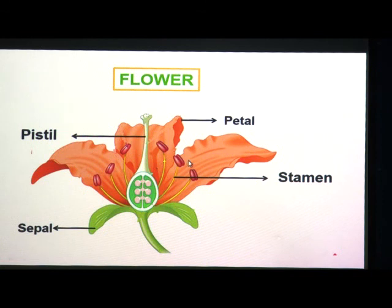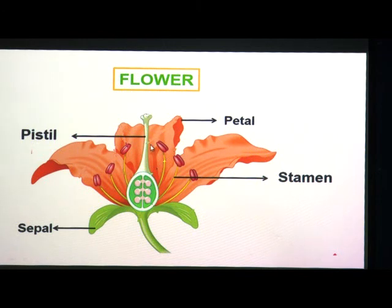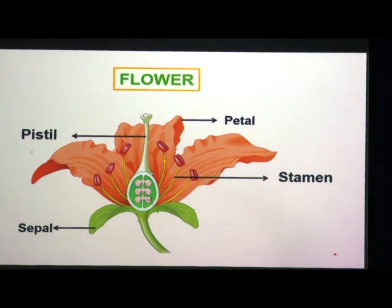The pistil is in the centre of the flower and is the female reproductive part. Each pistil consists of a stigma, style, and ovary. The top part is the stigma; the swollen base is the ovary; and the tube-like structure connecting them is the style. The stigma receives pollen grains from the anthers, which are then carried to the ovary through the style.